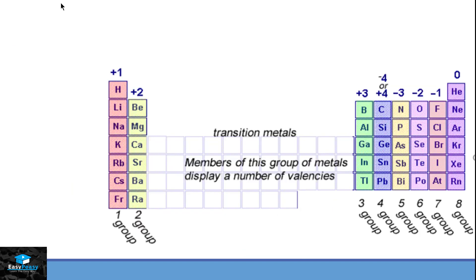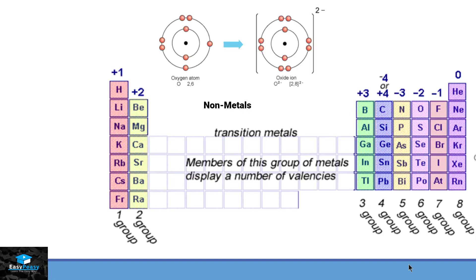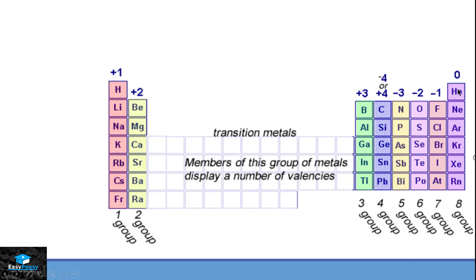The charges that appear on each group: group 1 elements lose one electron and get a +1 charge, group 2 elements lose two electrons and gain +2, group 3 becomes +3, and group 4 elements have either +4 or −4 charge depending on the situation. Moving on, nitrogen belongs to group 5 with five valence electrons — losing five is harder than gaining three, so nitrogen gets a −3 charge, then −2, then −1 for groups 6 and 7. These elements are mostly non-metals. Noble gases are stable and will not lose or gain electrons, so they get no charge.